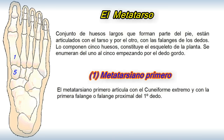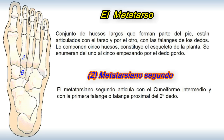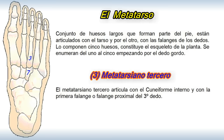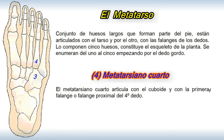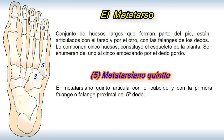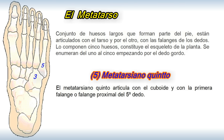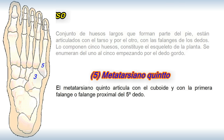El metatarsiano primero articula con el cuneiforme externo y con la primera falange o falange proximal del primer dedo. El metatarsiano segundo articula con el cuneiforme intermedio y con la falange proximal del segundo dedo. El metatarsiano tercero articula con el cuneiforme interno y con la falange proximal del tercer dedo. El metatarsiano IV y el V articulan con el cuboides y con la falange proximal del cuarto y quinto dedo respectivamente.